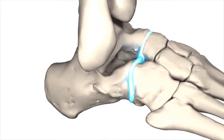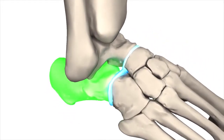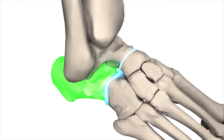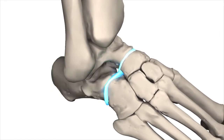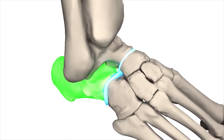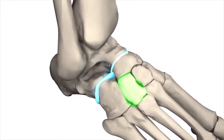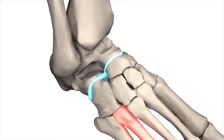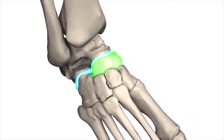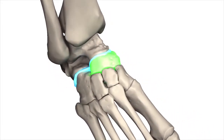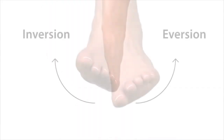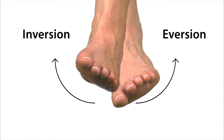The transverse tarsal joint is between the cuboid and calcaneus. The level of movement from this joint is extensive. Through articulation, the cuboid interacts with five bones — the calcaneus, lateral cuneiform, the fourth and fifth metatarsals, and the navicular — to produce flexing, rotation, extension, inversion, and eversion of the foot.